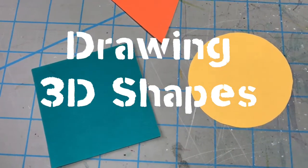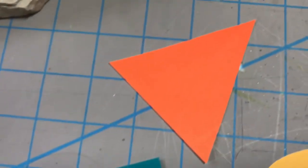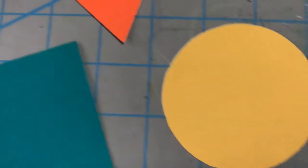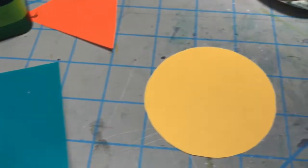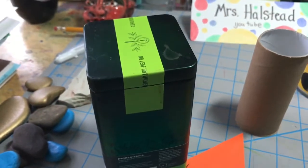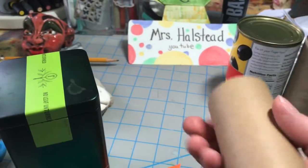Shapes are flat. Shapes like squares, triangles, and circles are flat. Shapes are flat, but forms are 3D. They take up space. They're the objects we live with every day.